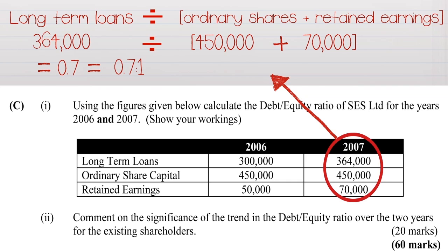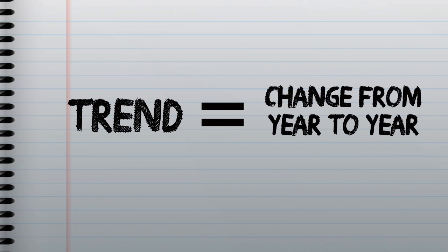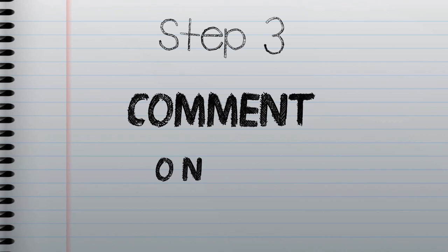The final part of the exam question was to comment on the significance of the trend for the shareholders in the business. Trend in the exam means the change from year to year. So in 2006 our debt equity was 0.6, and in 2007 it is 0.7. I would advise you to make four comments as follows.